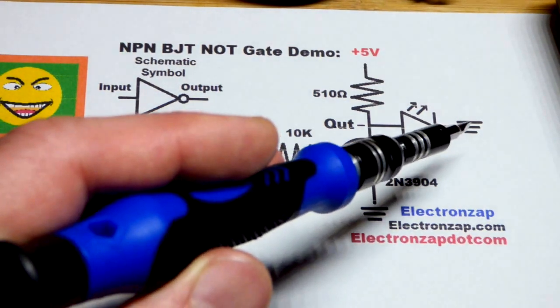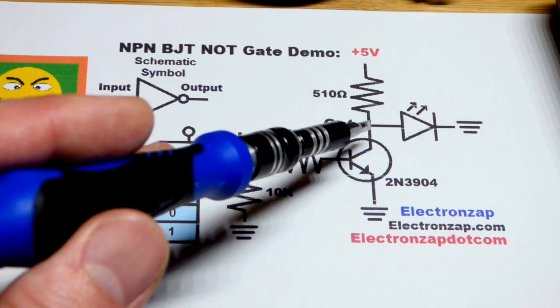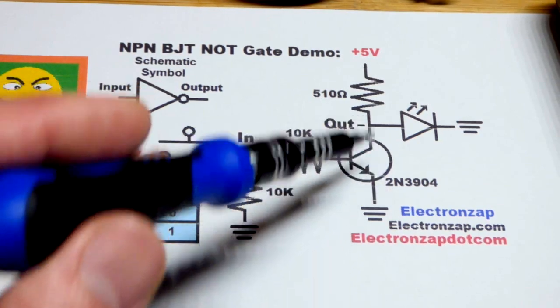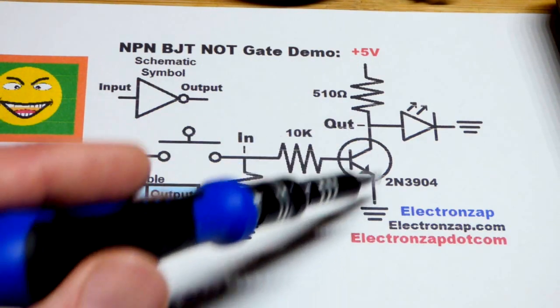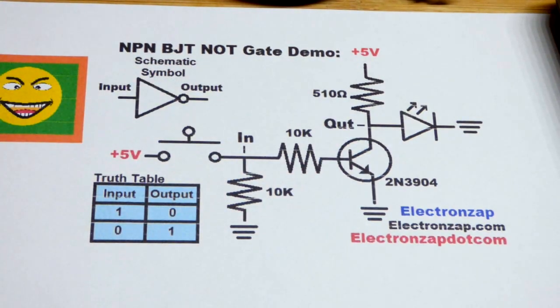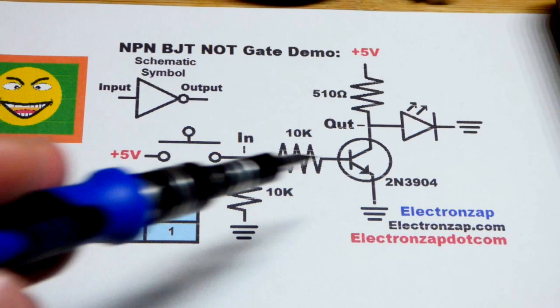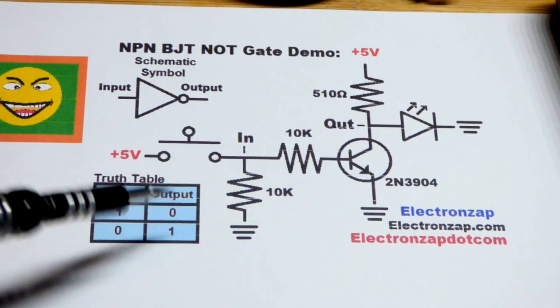And the reason why, you can see we've got ground on that side of the LED. If the transistor is conducting fully, then any current that gets through that resistor goes right to ground. The LED stays off. So that's how we invert the power in this case.